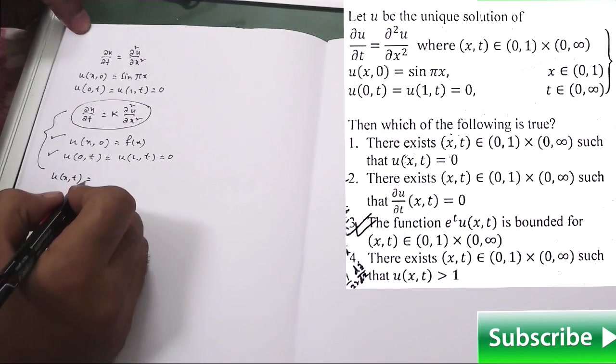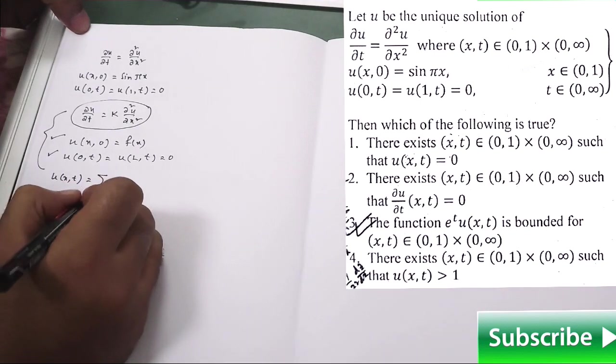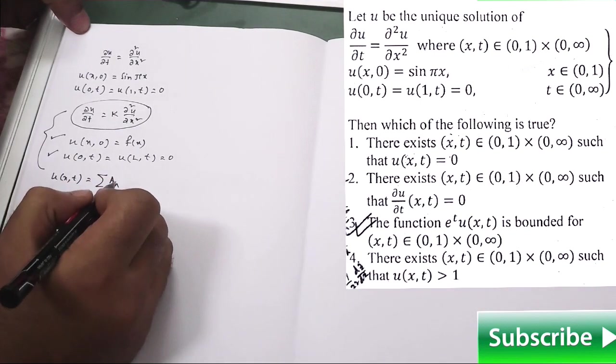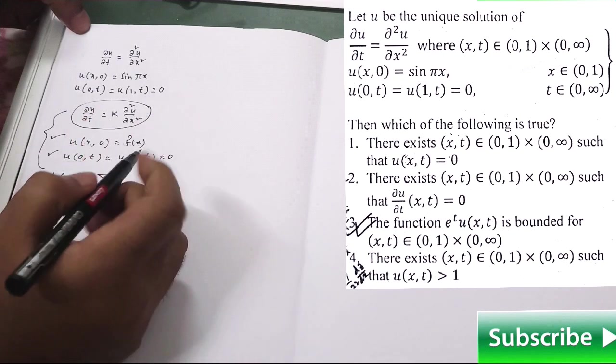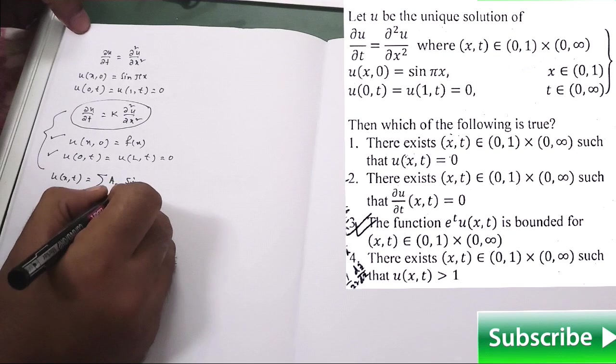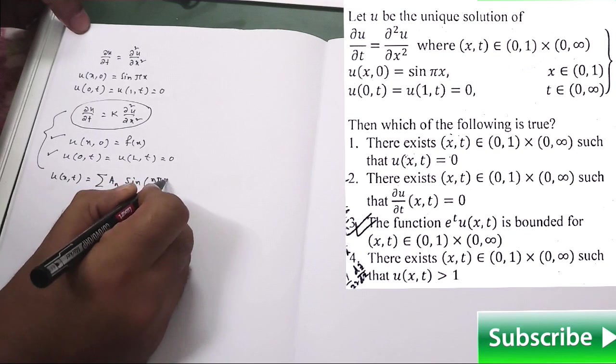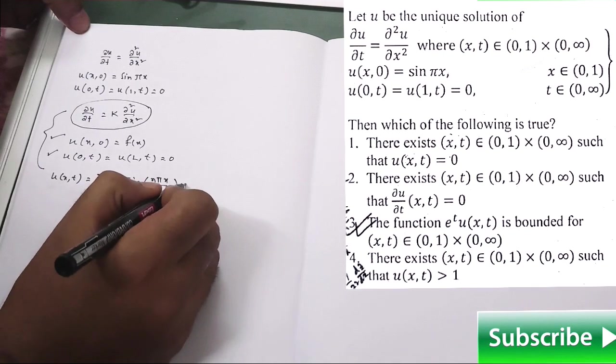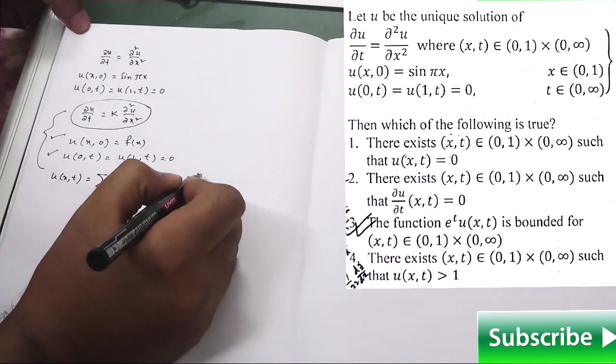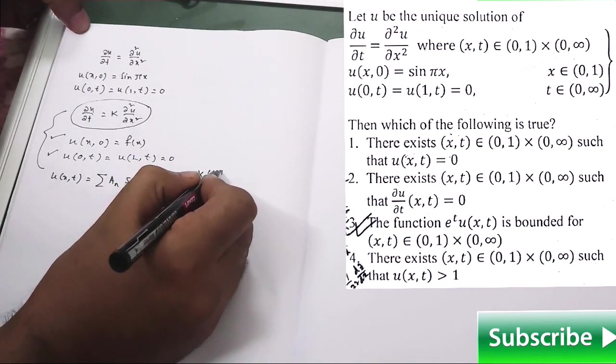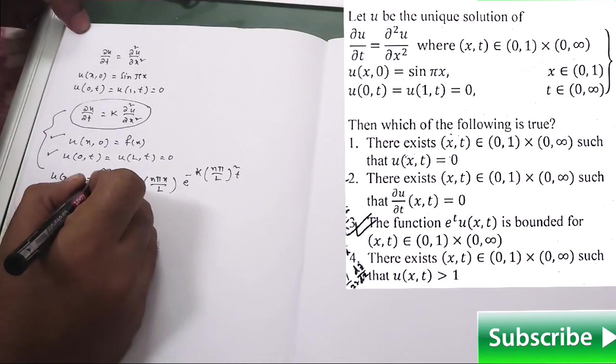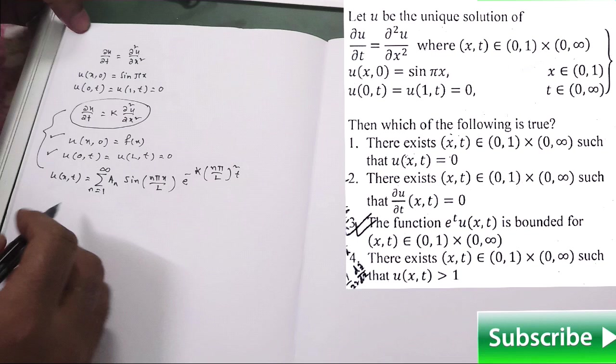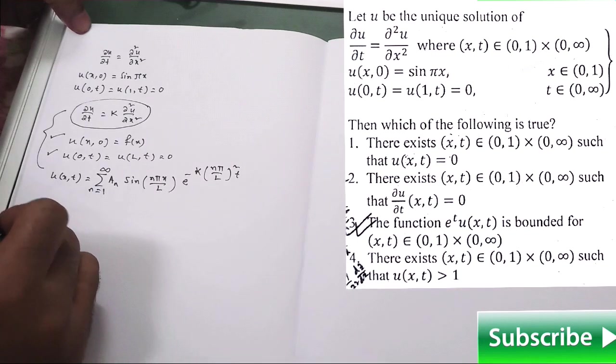Because in the exam hall, it is impossible to find the solution of heat equation. It will take too much time actually. So for that purpose, you need to remember n pi L square to t, n varies from 1 to infinity.